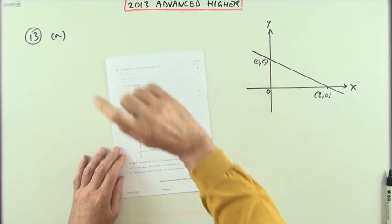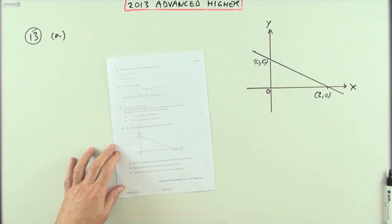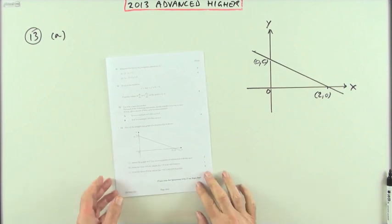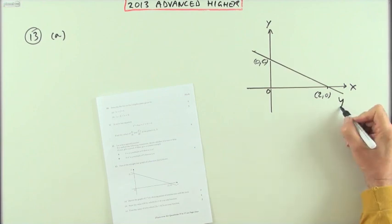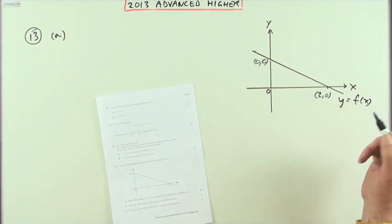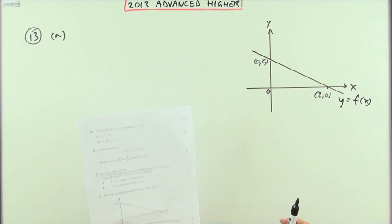Number 13 from the 2013 Advanced Higher graphs question. It's a short question but still five marks with no calculations whatsoever - it's a very visual question. The first part says sketch the graph of the inverse function. If this is the graph of y equals f of x, what will the graph of the inverse of f of x look like?